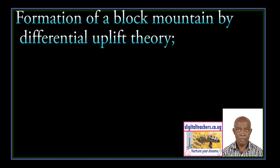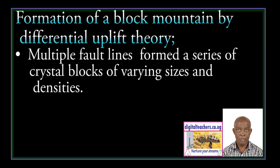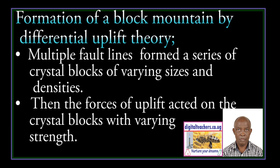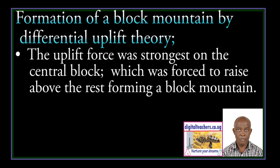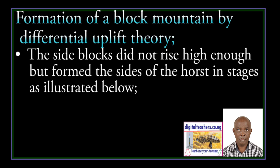Formation of Block Mountain by differential uplift. Multiple fault lines formed a series of crustal blocks of varying sizes. Then the forces of uplifting acted on the crustal blocks with varying strength. The uplifting force was strongest on the central block, which was forced to rise above the rest, forming a Block Mountain. The side blocks do not rise high enough but form the sides of the Block Mountain in stages, as illustrated below.